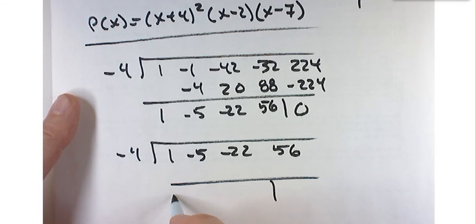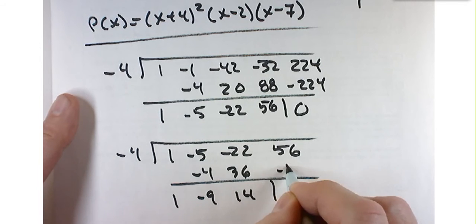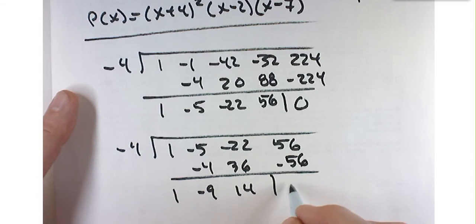And that's going to give me 1, negative 4, negative 9, positive 36, positive 14, negative 56, and 0.